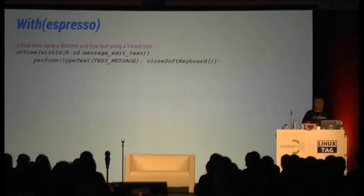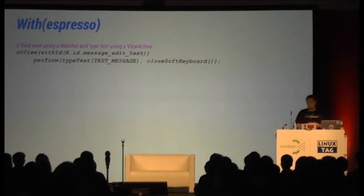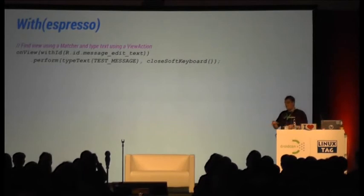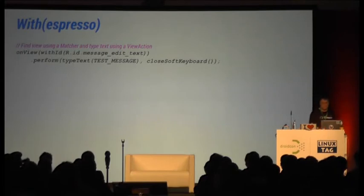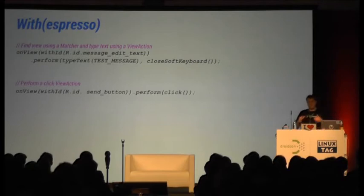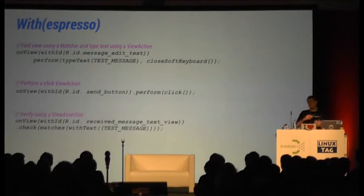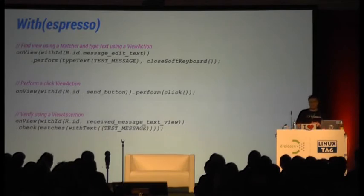The first thing we want to do is enter some text in the EditText — we can do that with a single line. We say onView matching the view with an ID, then perform a view action and type some text. Then we want to perform a click on a button: again we match our view, execute the perform method, and perform a view action. The last thing is verifying the assertion that the text is displayed in the other activity — we match the view and use the check method.